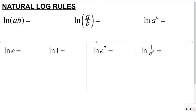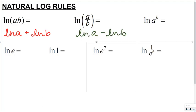Natural logs follow the same rules as other logs. Natural logs have a base of e. So following those same rules: the natural log of a times b equals the natural log of a plus the natural log of b; the natural log of a divided by b equals the natural log of a minus the natural log of b; and the natural log of a to the b equals b times the natural log of a — you can bring that exponent to the front.